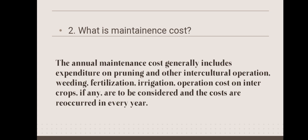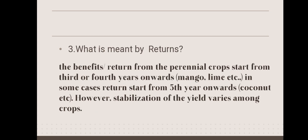What is maintenance cost? Maintenance cost is the annual cost that generally includes expenditure on pruning and other intercultural operations, weeding, fertilization, irrigation, and operation cost on indoor crops if any. These costs are incurred every year. What is meant by returns? Returns are the benefits from perennial crops starting from the third or fourth year onwards. Crops like mango and lime are mostly considered. In some cases returns start from the fifth year onwards, for example in coconut. The stabilization of yield varies among crops.